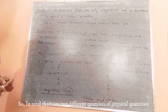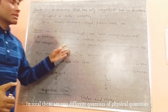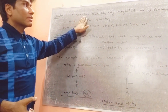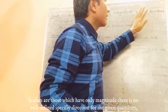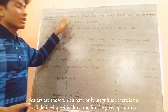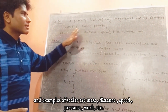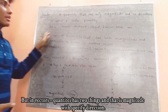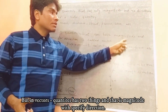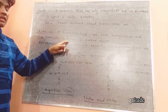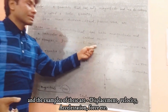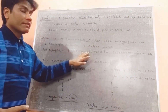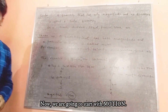In total, there are two different kinds of physical quantities, categorized as scalar and vector. Scalars are those which have only magnitude with no well-defined specified direction — examples are mass, distance, speed, pressure, and work. Vectors have both magnitude and well-defined specified direction — examples are displacement, velocity, acceleration, and force. Now we are going to start with our main topic: motion.